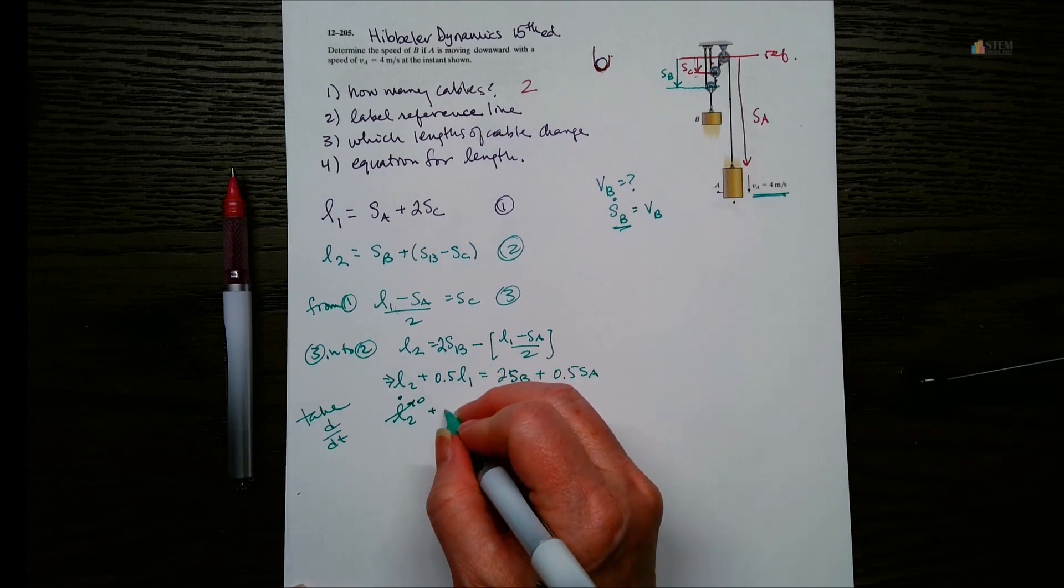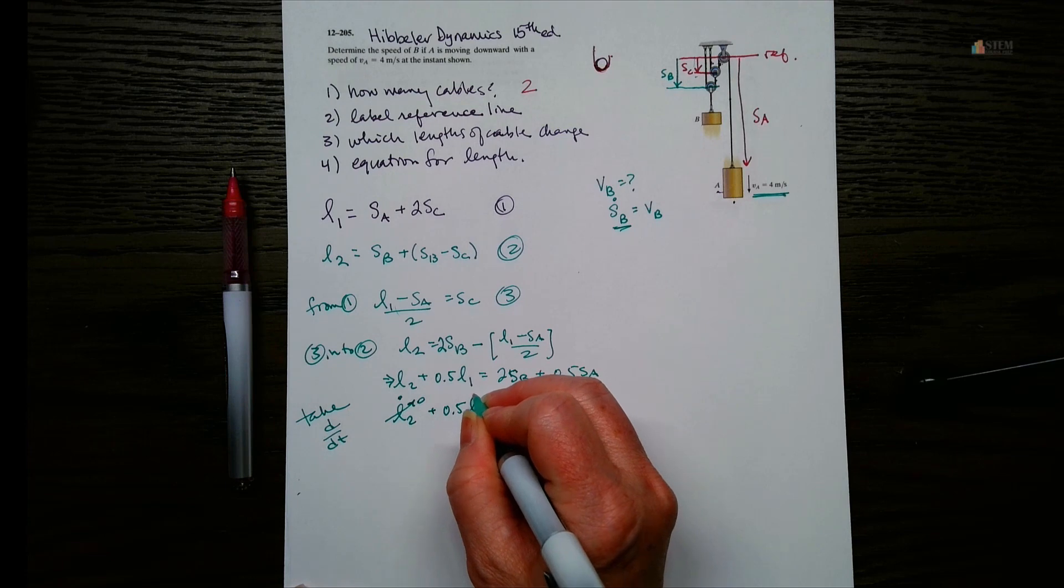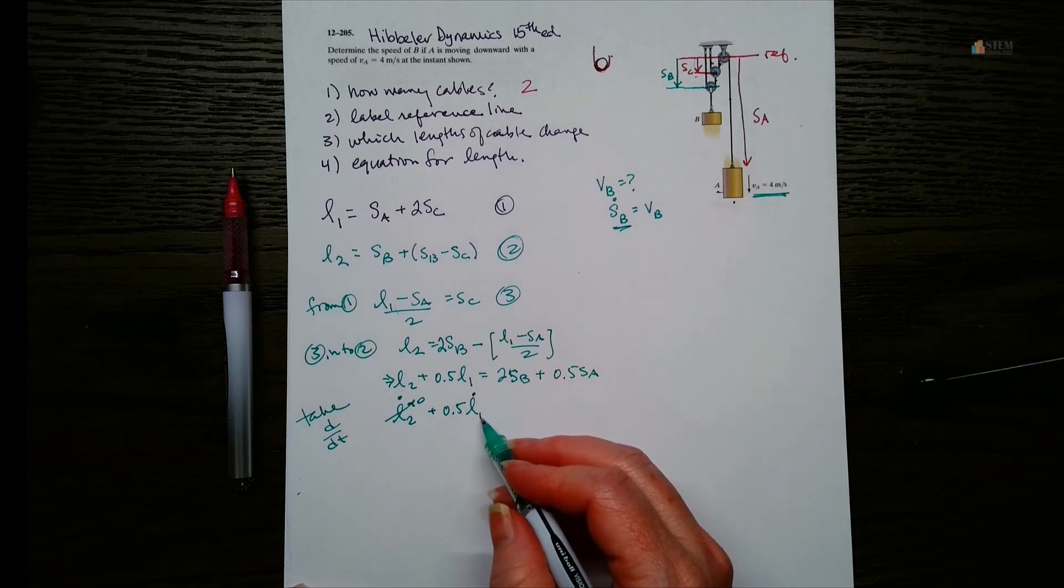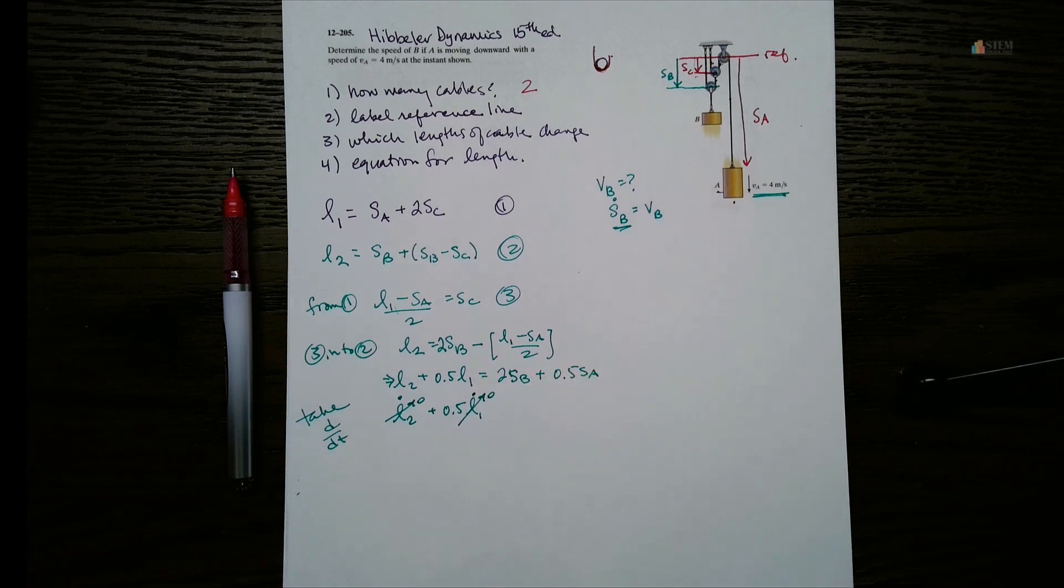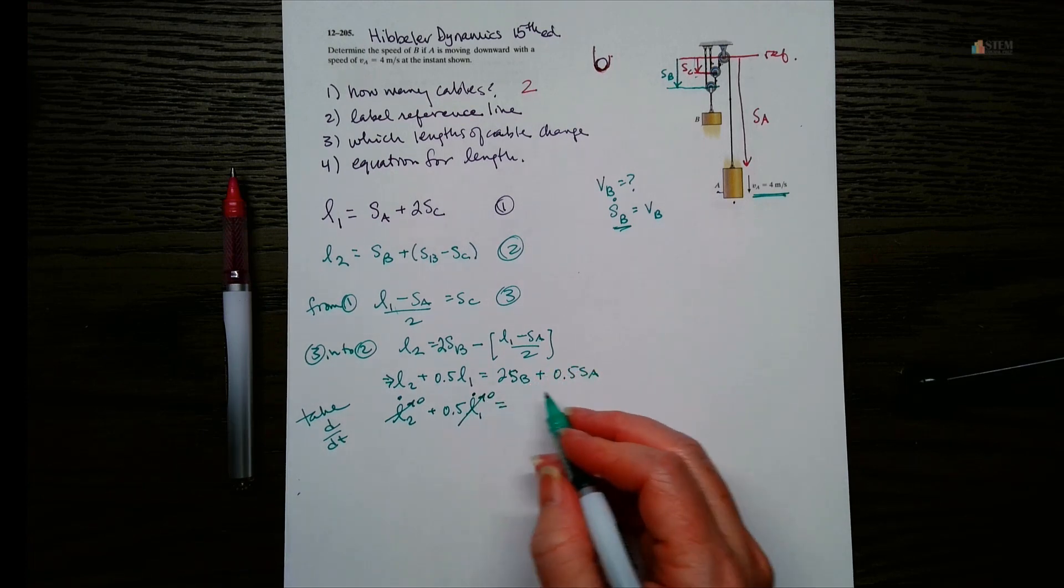And then, you know, we come over here. We'll have 0.5 L1 dot. Same thing. L1 is not changing length, right? It's constant. So if we take the derivative, that's going to go to zero. And then we just keep going.